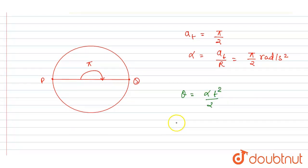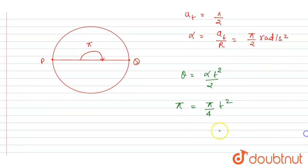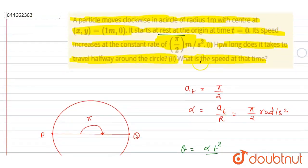So it travels pi angle. Alpha is pi by two, so it will be this. From here you will get the time equals to two seconds for the first part. And in the next part we wanted the velocity at point Q.